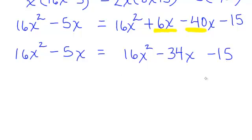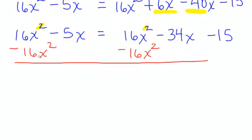We have minus 15. When I first look at this I think it's a quadratic equation because I see that squared — so I think I have to get everything on one side. But watch what happens: when I subtract 16x² from both sides, the 16x² cancels out on the left and the right. I don't have any x squared. This is actually not quadratic — this is linear! So I have negative 5x equals negative 34x minus 15.